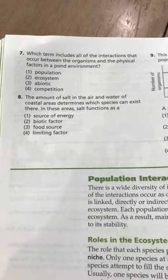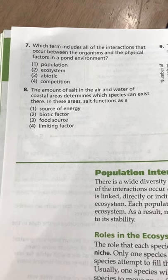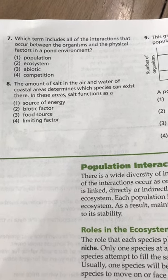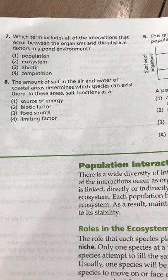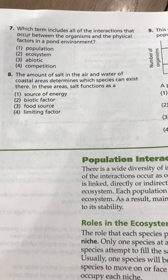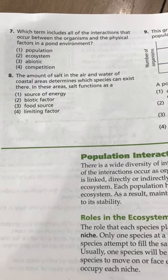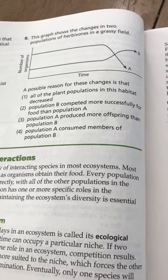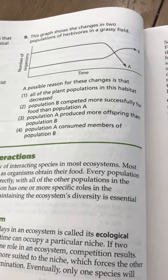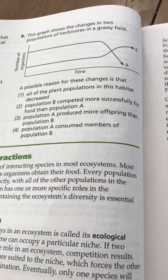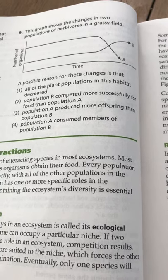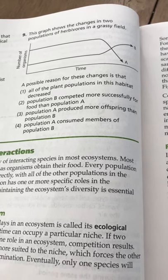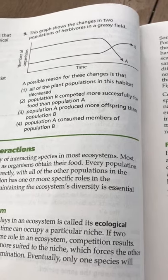Number 6: When two different species live in the same area and use the same limited resources, which of the following will occur — competition, succession, parasitism, or industrialization? Number 7: Which term includes all of the interactions that occur between the organisms and the physical factors in a pond environment — population, ecosystem, abiotic, or competition? Number 8: The amount of salt in the air and water of coastal areas determines which species can exist there. In these areas, salt functions as a source of energy, a biotic factor, a food source, or a limiting factor? Number 9: This graph shows the changes in two populations of herbivores in a grassy field. A possible reason for these changes is that all the plant populations decreased; population B competed more successfully for food than population A; population A produced more offspring than population B; or population A consumed members of population B.